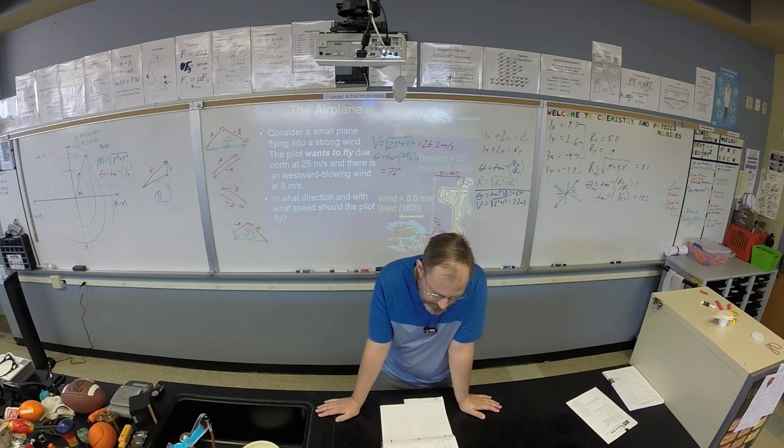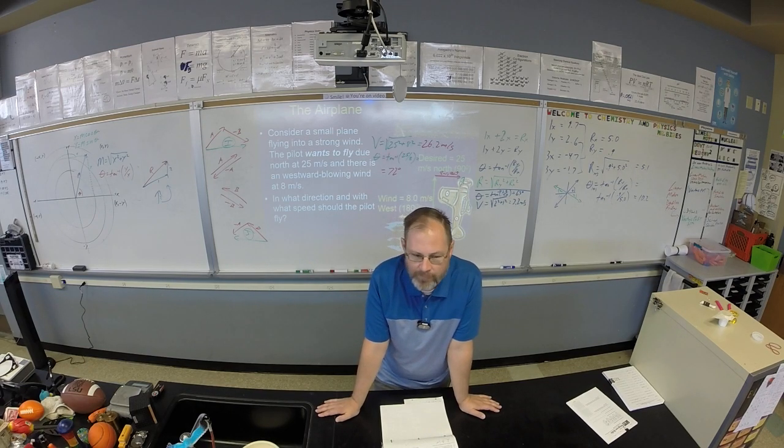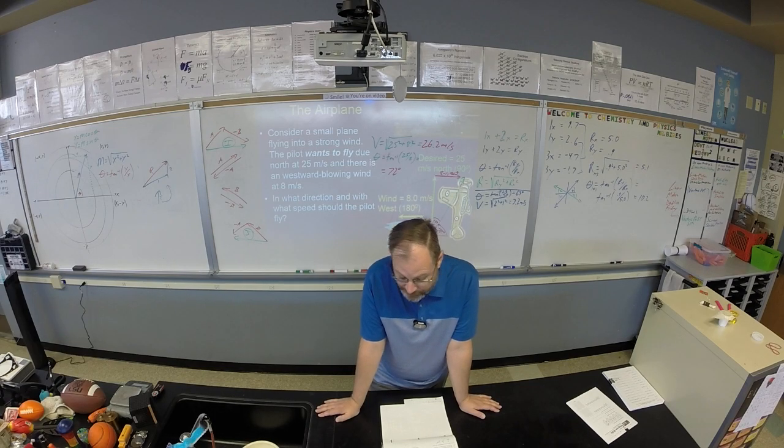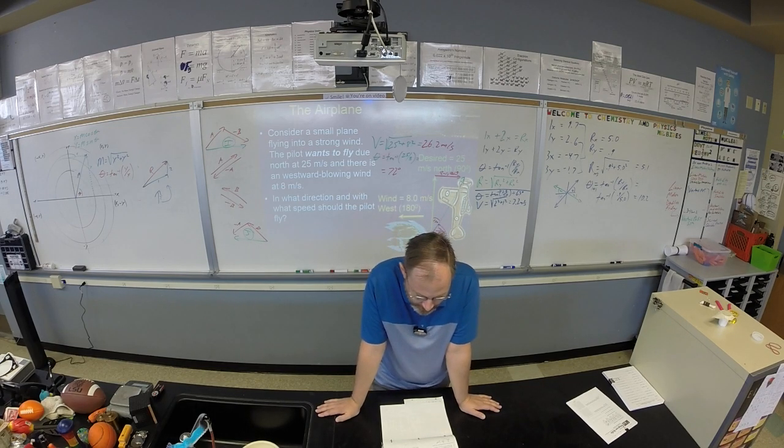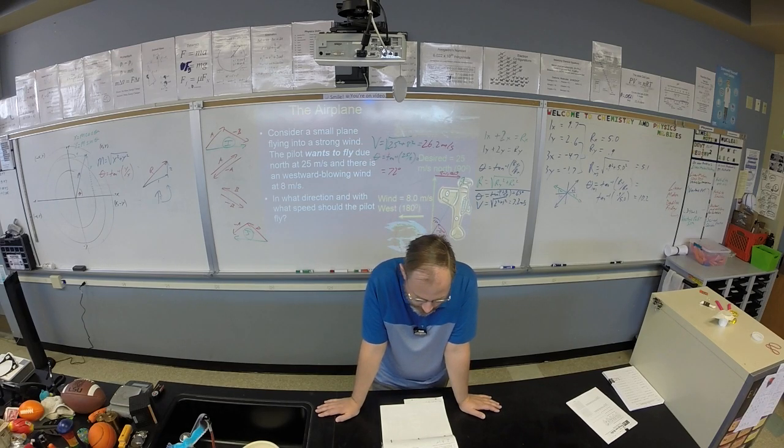Number five. Which vector or vectors have a non-zero x component? All of them. All of them except? B. B. All of them except B. B has a zero x component because B is only in the y direction. Good.